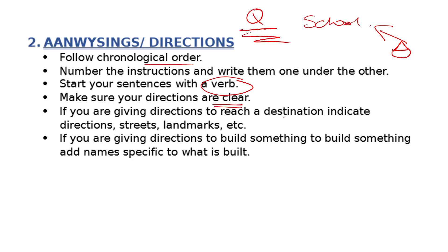Because we're giving directions to a destination — which is school — you have to indicate streets, landmarks, etc., so people can know that they're on the right way to your school. For example, you are at your house. Where do you turn first? Are you going to turn left or turn right?